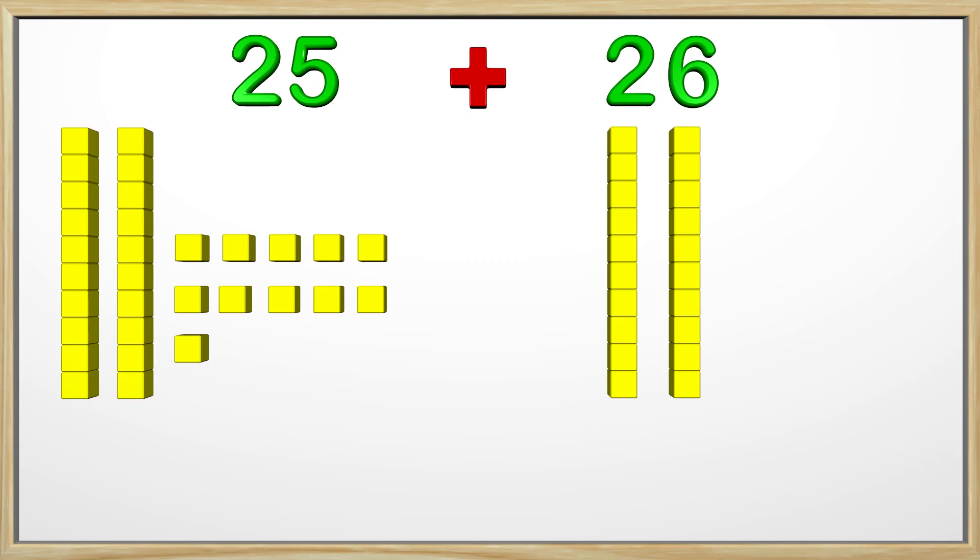If you watched the other video you know that we cannot have 2 digits in the ones place. Once we have 10 ones we need to make a 10 out of it. Let's do that with the blocks. Now we have a tens block to add with the other tens blocks.